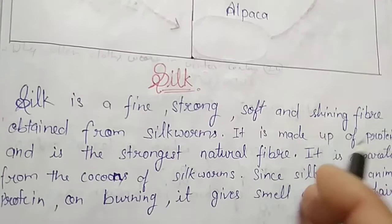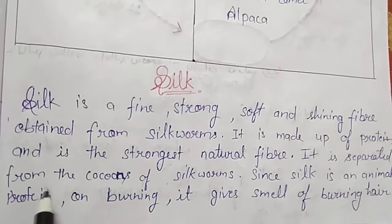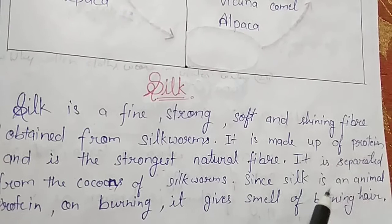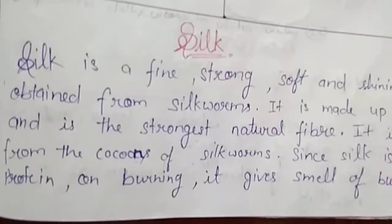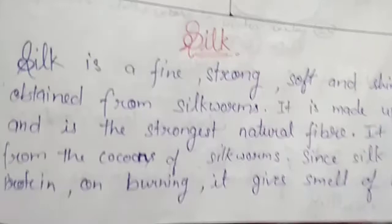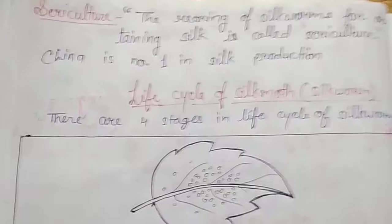Our next topic is silk. Silk is also an animal fiber and is very costly. Silk is a fine, strong, soft, and shining fiber obtained from silkworms. It is made up of protein and is the strongest natural fiber. It is separated from the cocoons of silkworms. Since silk is an animal protein, on burning it gives a smell of burning hair — this is how we can identify whether a cloth is made of pure wool or synthetic wool. Silk fibers are converted into silk yarn, which is used for making silk cloth, then used for saris and other dresses.